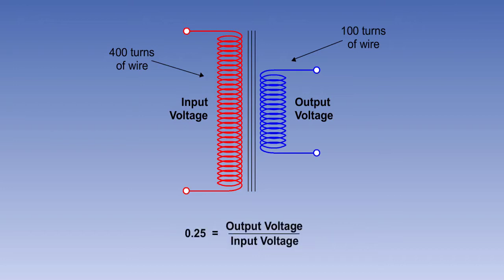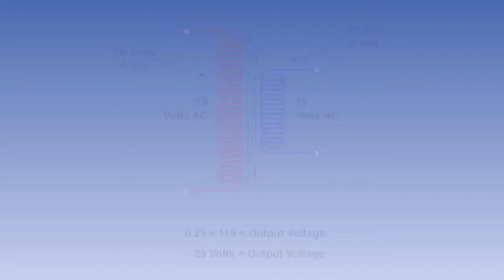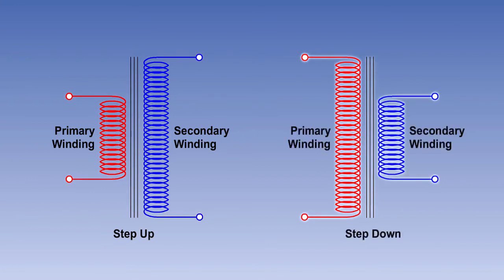We can now use this ratio to calculate the output voltage of the transformer. If, in this example, the input AC voltage was 115 volts, the output voltage would be 115 multiplied by 0.25, or approximately 29 volts AC. A transformer with a transformation ratio greater than 1 is known as a step-up transformer, whilst a transformer with a ratio less than 1 is known as a step-down transformer.